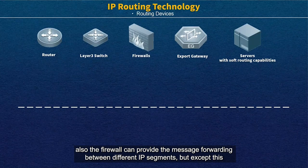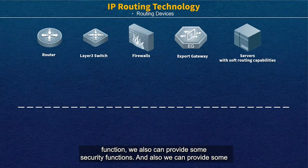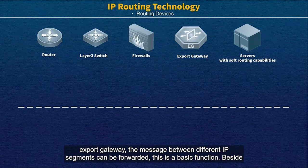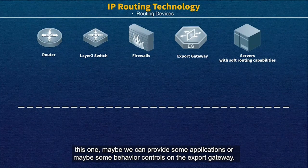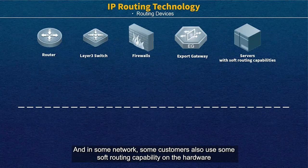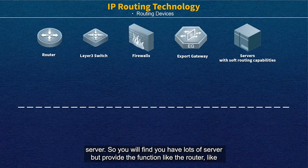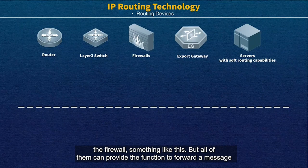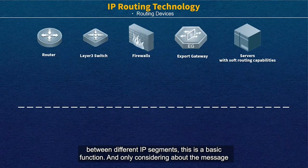The firewall can also provide message forwarding between different IP segments, but beyond this function, we can also provide some security functions. We can also provide some export gateway. Message forwarding between different IP segments is a basic function, but we can also provide some application or behavior control on the export gateway. In some networks, customers also use soft routing compatibility on a hardware server, so you will find servers that provide functions like a router or like a firewall. But all of them can provide the function to forward messages between different IP segments — this is the basic function.